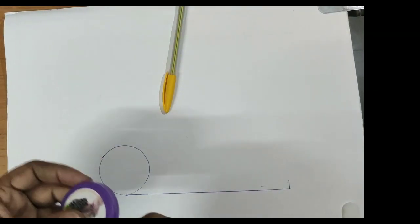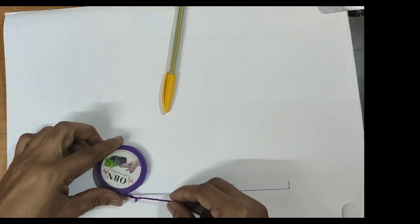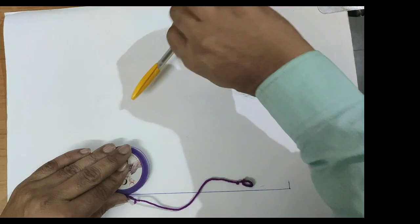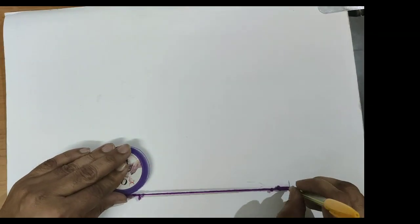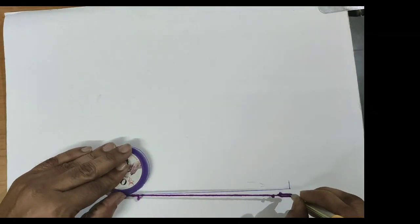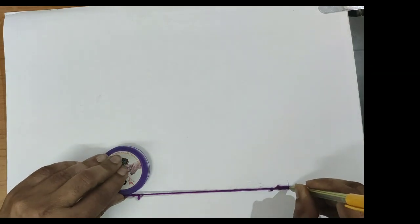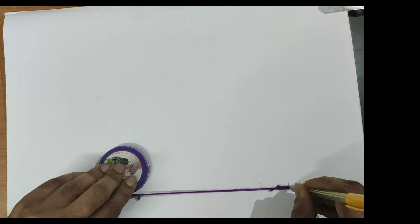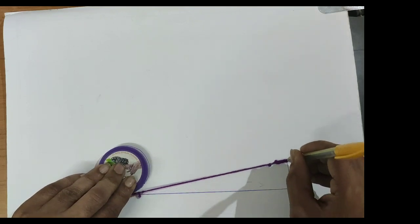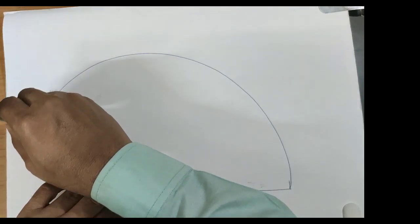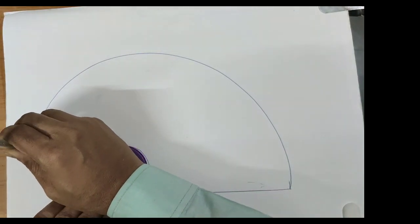Now let us wind thread around a circle keeping thread tight. First point is here and the other end is here. Let us hold the pen keeping thread tight. Now move this pen. It will give us involute of a circle.